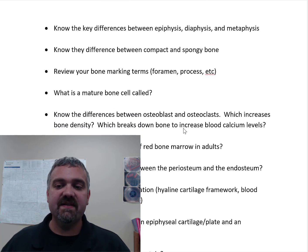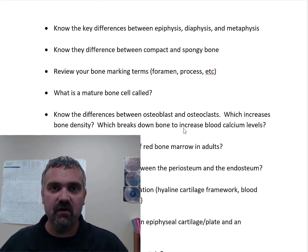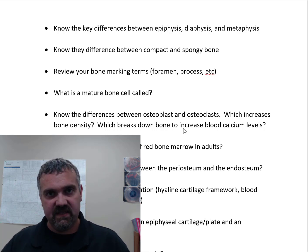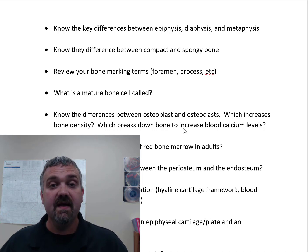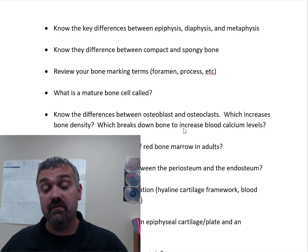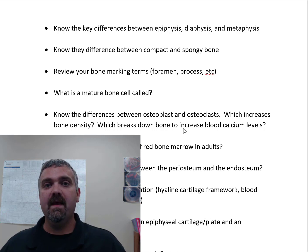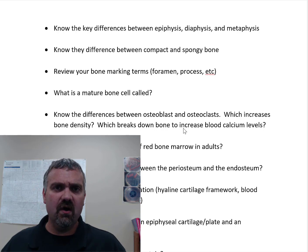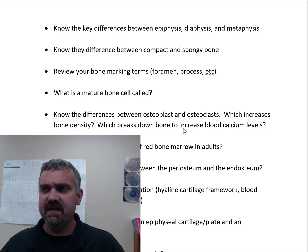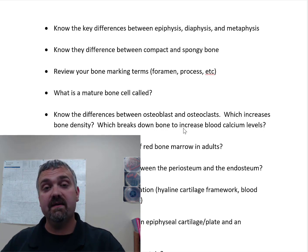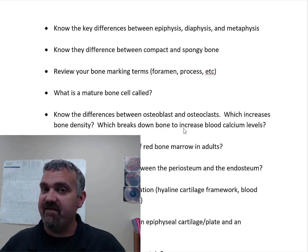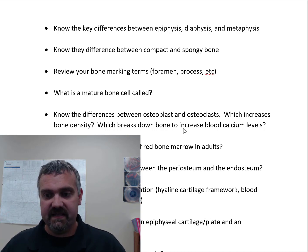Know the key differences between the epiphysis, diaphysis, and metaphysis. If you're looking at a typical long bone, the shaft of that bone is called the diaphysis. The ends of the bones that actually articulate with other bones and form joints are the epiphysis. The metaphysis is where they come together. In an adult, once you've reached skeletal maturity and all your growth plates are closed, the metaphysis doesn't matter that much because the cartilage and growth plate has been replaced by bone.